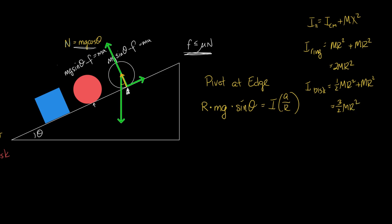Now, if you're trying to write notes, you don't have to write all that down. Just write, you have to use the parallel axis theorem to shift the moment of inertia to the edge. RMG sine theta equals 2 MR squared times A over R.